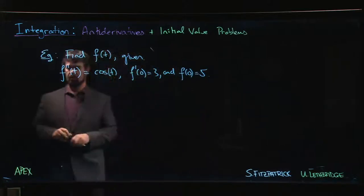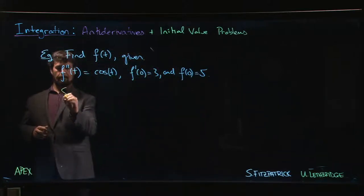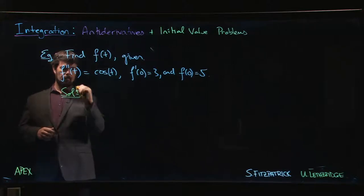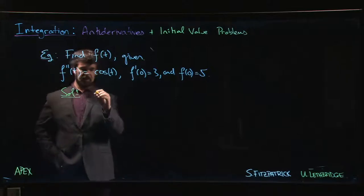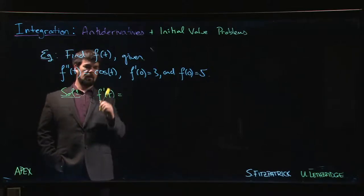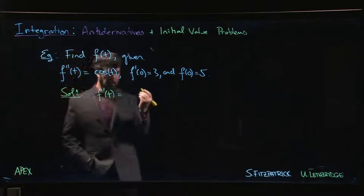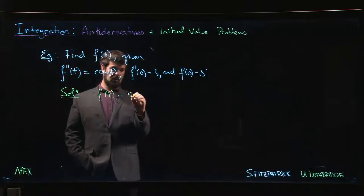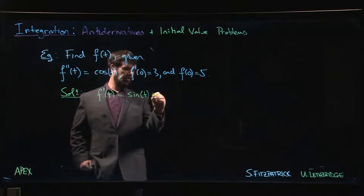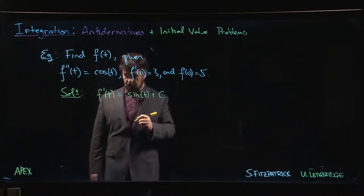So the way this works is with antiderivatives. We say, okay, so f prime of t, we need an antiderivative for cosine. We know that an antiderivative for cosine is sine. But of course, there might be a constant.